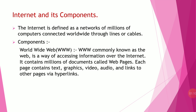Now if we talk about components, we have so many components of Internet. The first one is World Wide Web. World Wide Web, commonly known as Web, is a way of accessing information over the Internet. It contains millions of documents called Web Pages. Each page contains text, graphics, video, audio and links to other pages via hyperlinks.